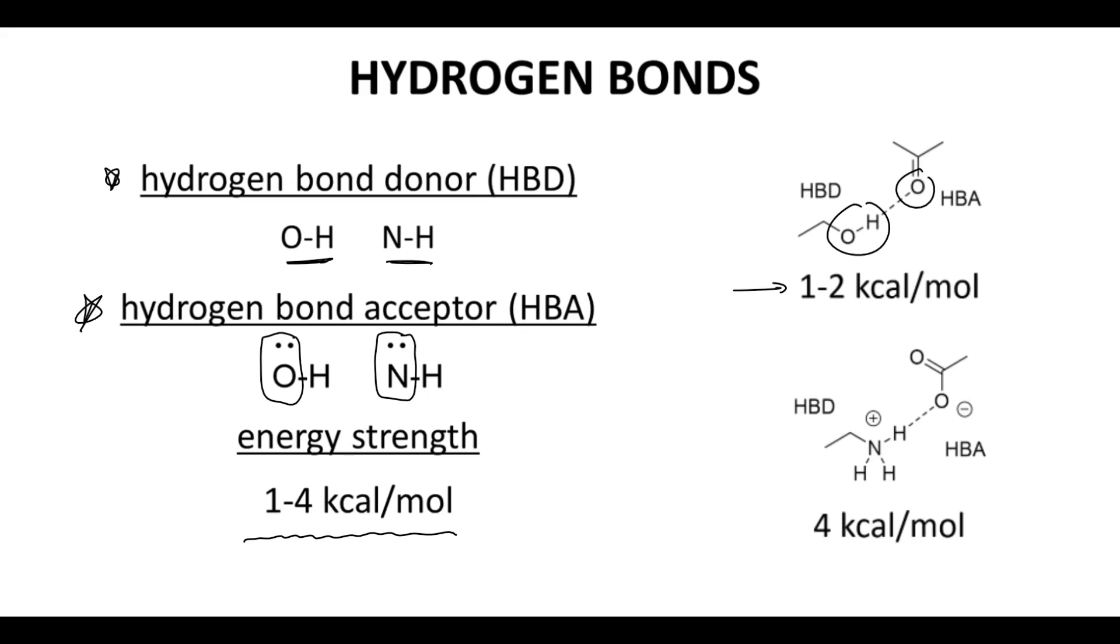The energy of the hydrogen bond becomes stronger if either the donor or acceptor is charged. Charged donors are often protonated amines, which are basic enough to be protonated at biological pH of 7.4. Charged acceptors are often carboxylic acids, which are acidic enough to be deprotonated at biological pH.